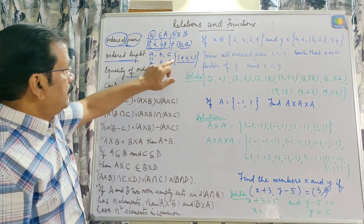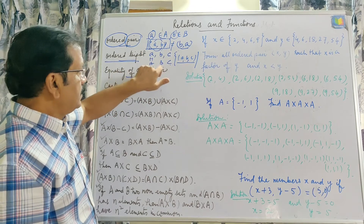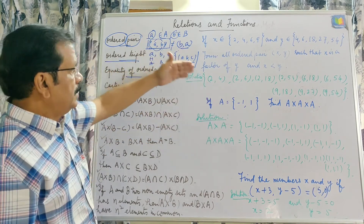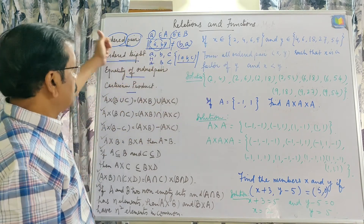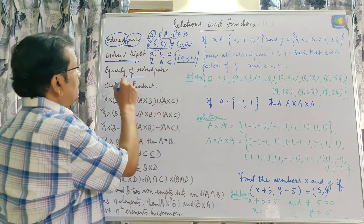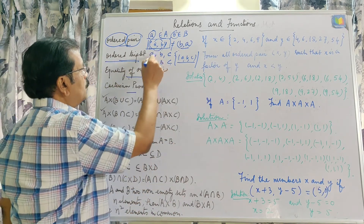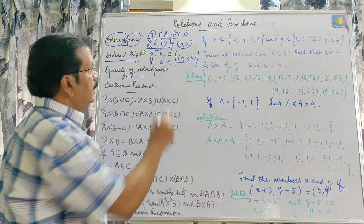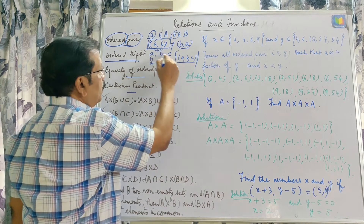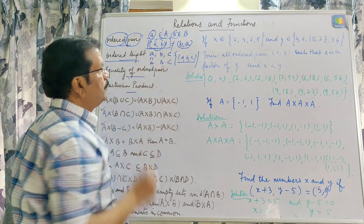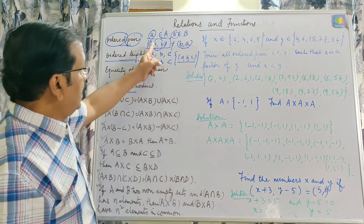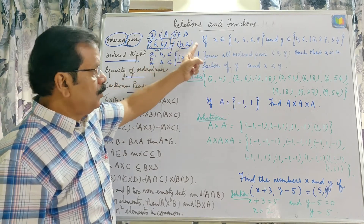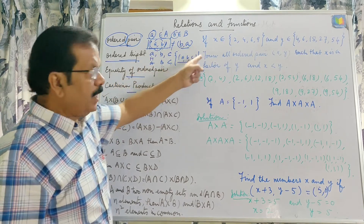We will study these things with examples also. Regarding equality of ordered pairs — if two ordered pairs are equal, then their corresponding elements will be equal. That is, A will be equal to A and B will be equal to B.